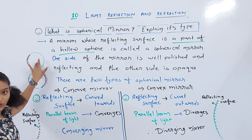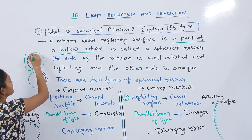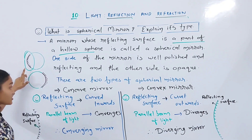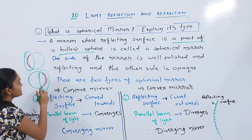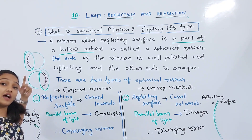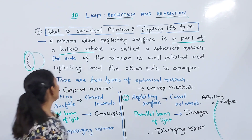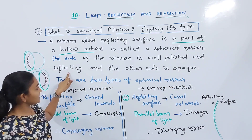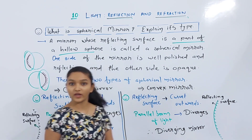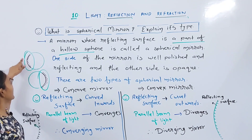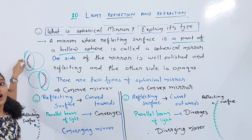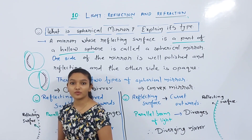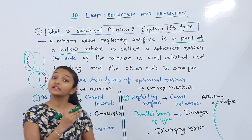Consider this sphere — we discuss a part of it. The outside is a curved outside polished surface, and the inside is a polished surface. One side of the mirror is well polished and reflecting, and the other side is opaque. The light will not pass through the opaque side.